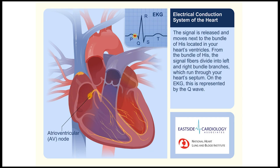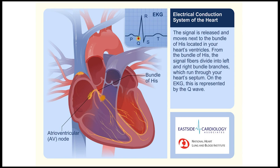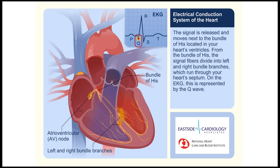The signal is released and moves next to the bundle of His, located in your heart's ventricles. On the bundle of His, the signal fibers divide into left and right bundle branches, which run through your heart's septum. On the EKG, this is represented by the Q wave.